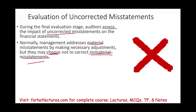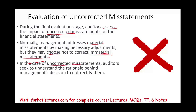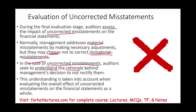Immaterial means it's not really going to change the perception of the user. In the case of uncorrected immaterial misstatements, auditors seek to understand why the company did not correct them — what's the reason behind the decision not to correct it. This understanding is taken into account when evaluating the overall effect of the uncorrected misstatements on the financial statement as a whole, because for the account itself it may be immaterial, but we have to take a look at the whole financial statement as a whole to see whether there's an issue.